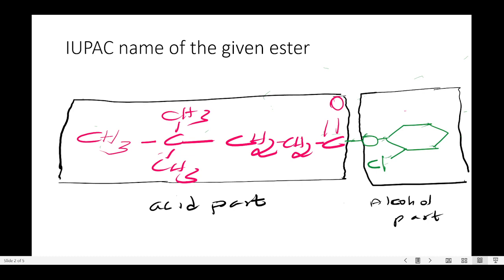The pink color of the structure encompasses the acid part: CH3-C(CH3)2-CH2-CH2-C(=O), and then we have the alcohol part of the ester, which is the cyclohexyl ring with the chloro group.